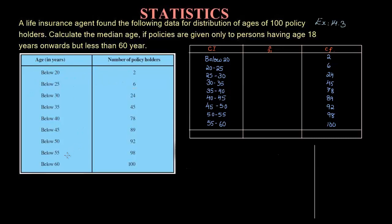You can observe the data given in the first column of the question — it is in 'below than' format. So your first duty is to convert this data into class intervals. The first class interval will be similar to the question: below 20. The upper limit of the class interval will be the lower limit of the previous class interval, so that is 20. The upper limit will be given in the second class interval of the question, that is 25.